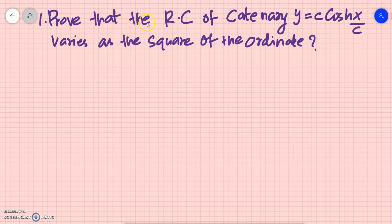The problem is that the radius of curvature — RC is short form of catenary. Catenary is a curve y = c·cosh(x/c), where cosh is a hyperbolic function. The radius of curvature of the catenary varies as the square of the ordinate. If we call it y, then we can prove this square.